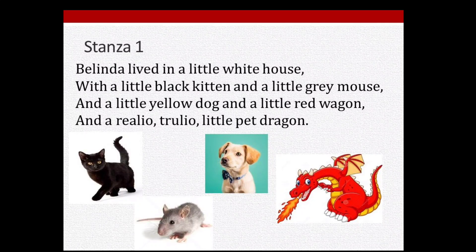Look at the last line of the stanza: 'a real you, true you.' The spelling of 'real' and 'true' has been changed by the poet. This is called poetic license — poets have the authority to change the spelling of any word so that they can create a musical effect and rhythm in their poem.